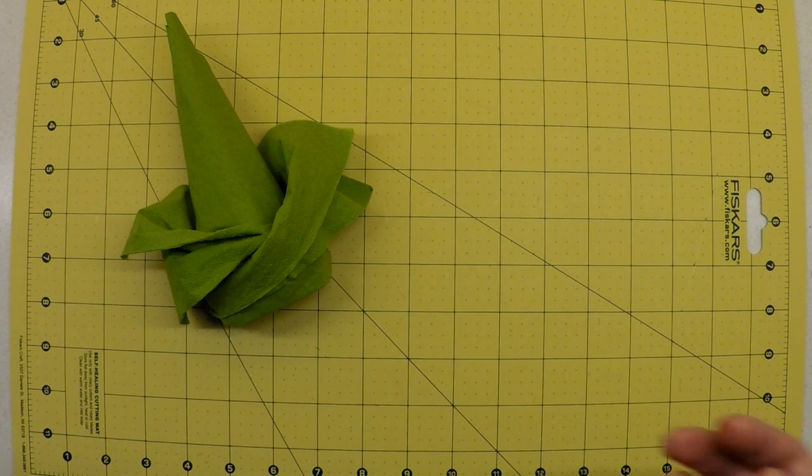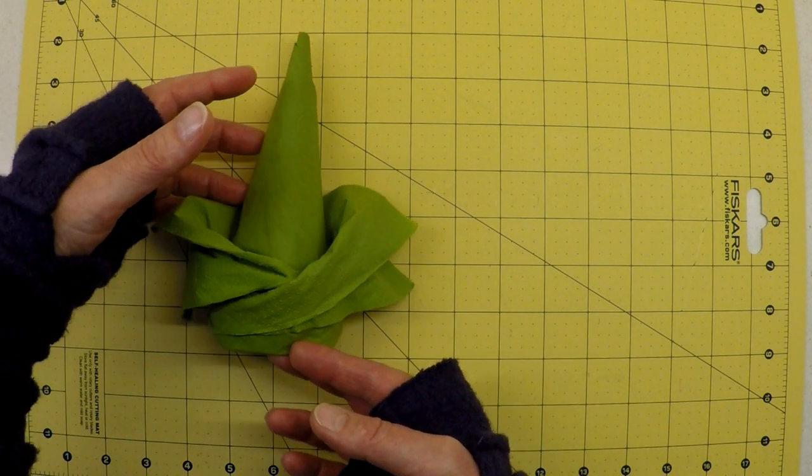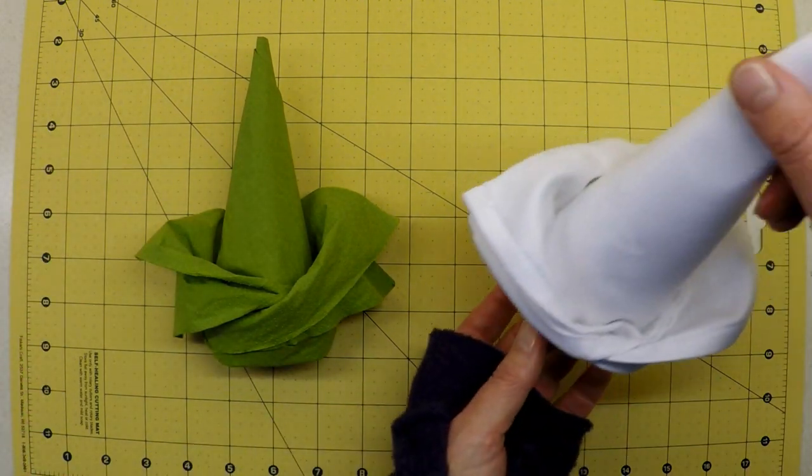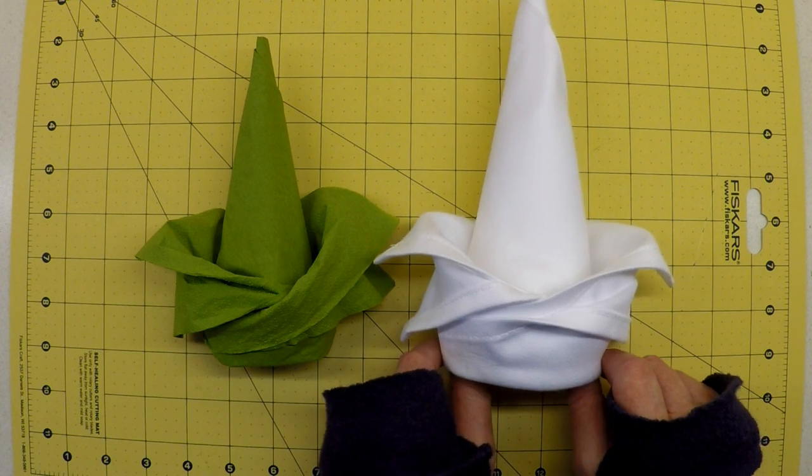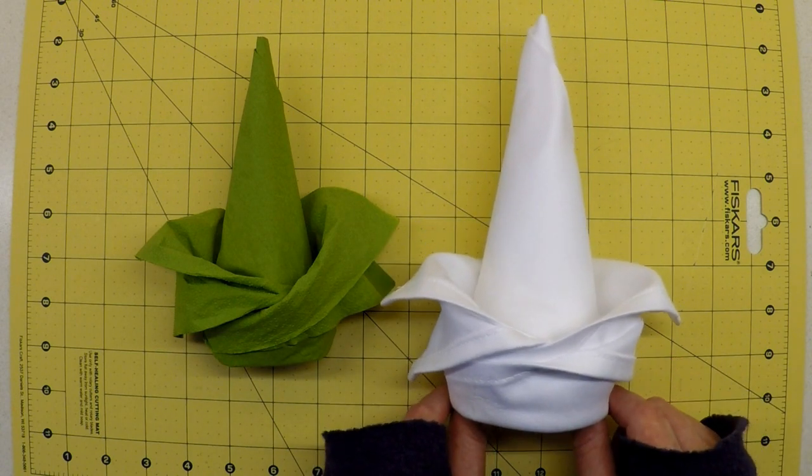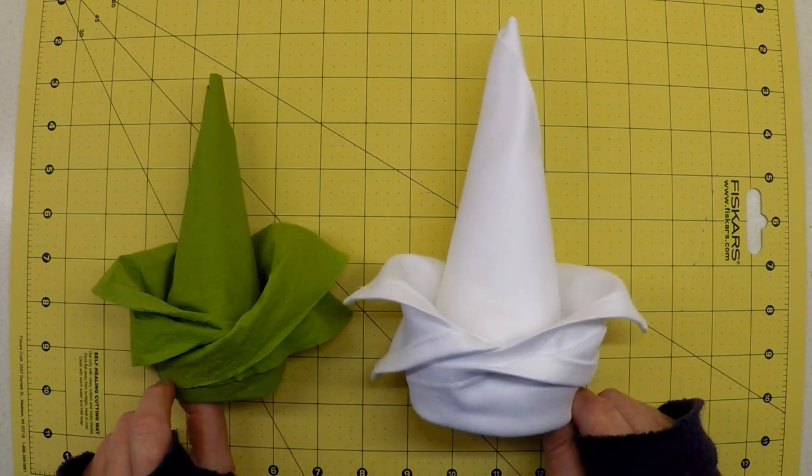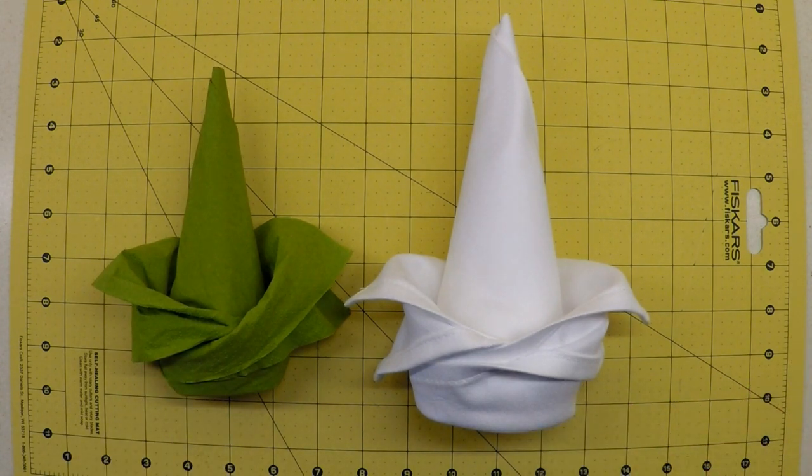To give you an idea of how that impacts the size of the finished item, this is a version created out of that linen, or actually Egyptian cotton napkin as well. So I hope that you can see the difference there.